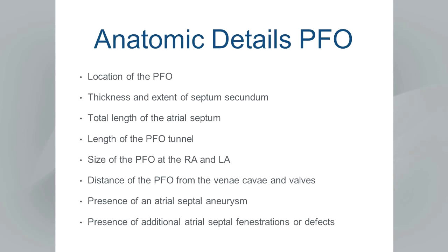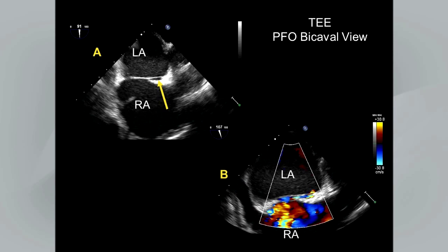Anatomic details important to note when evaluating a PFO for possible transcatheter closure include: location of the PFO, thickness and extent of septum secundum (including any lipomatous hypertrophy that may interfere with device closure), total length of the atrial septum, length of the PFO tunnel, size of the PFO at right and left atrial sections, distance of the foramen ovale from the vena cava and valves, presence or absence of an atrial septal aneurysm, and any additional fenestrations or defects. A TEE image nicely demonstrates the overlap of septum primum and septum secundum.